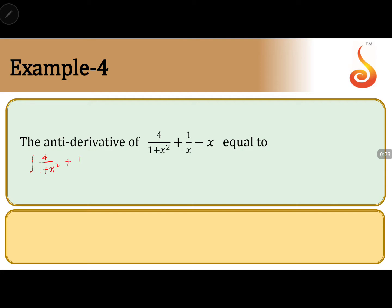Now, 4 is a constant, so it will go outside the integration. We get: 4 times the integral of 1/(1 + x²) dx, plus the integral of 1/x dx, minus the integral of x dx.